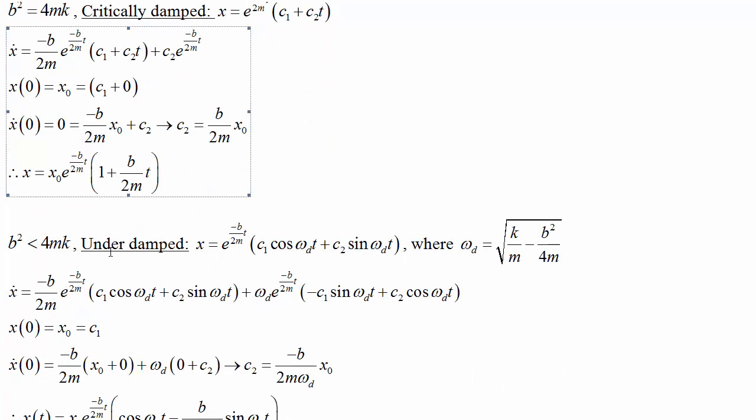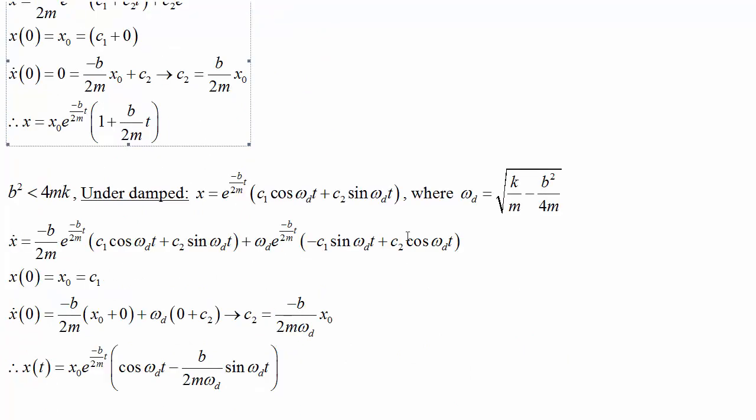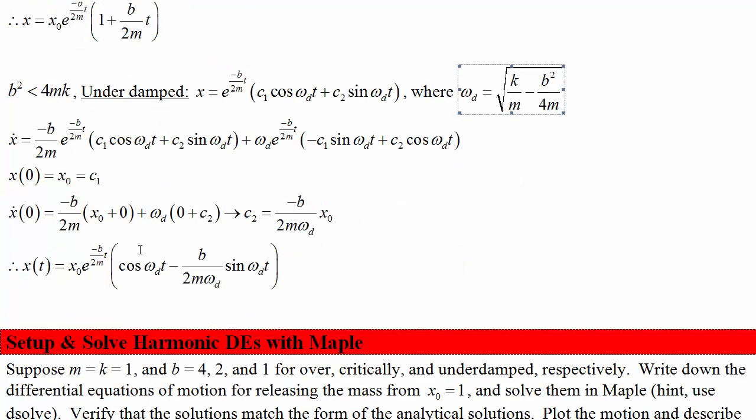And for the underdamped case, if b squared is less than 4mk, in this particular case, we end up with x of t is this exponentially decaying cosine and sine term.